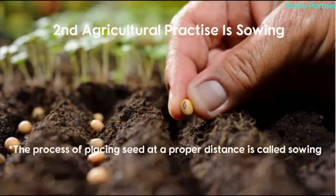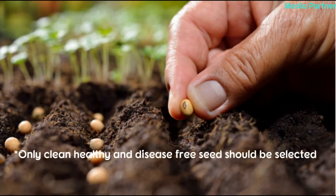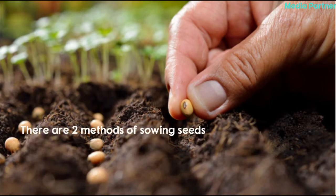The second agricultural practice is sowing. The process of placing seeds at a proper distance is called sowing. Only clean, healthy, and disease-free seeds should be selected. Seeds should be treated with fungicides. There are two methods of sowing seeds.